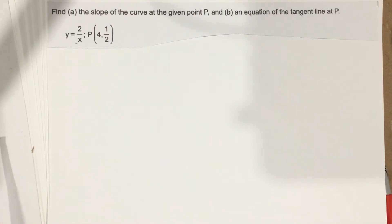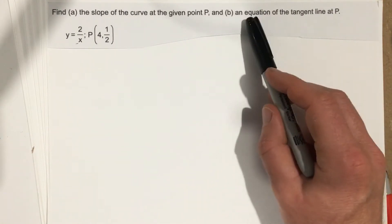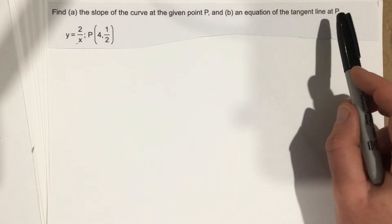This is problem number seven from section 2.1. In this problem it says find the slope of the curve at the given point P and an equation of the tangent line at P.